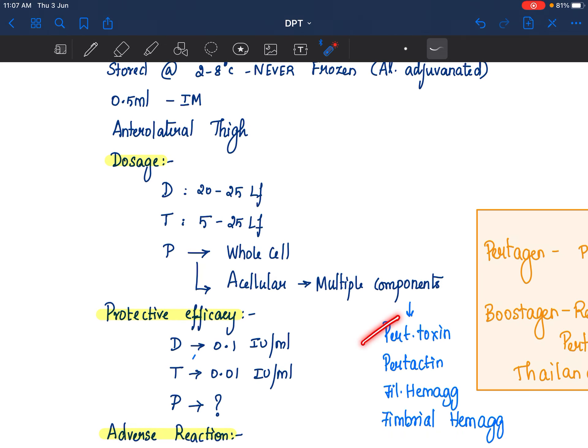Namely pertussis toxin, your pertactin, filamentous hemagglutinin, fimbrial hemagglutinin. Note that none of the Indian vaccines have this fimbrial hemagglutinin. So this is not there. Mostly rest of them are there.